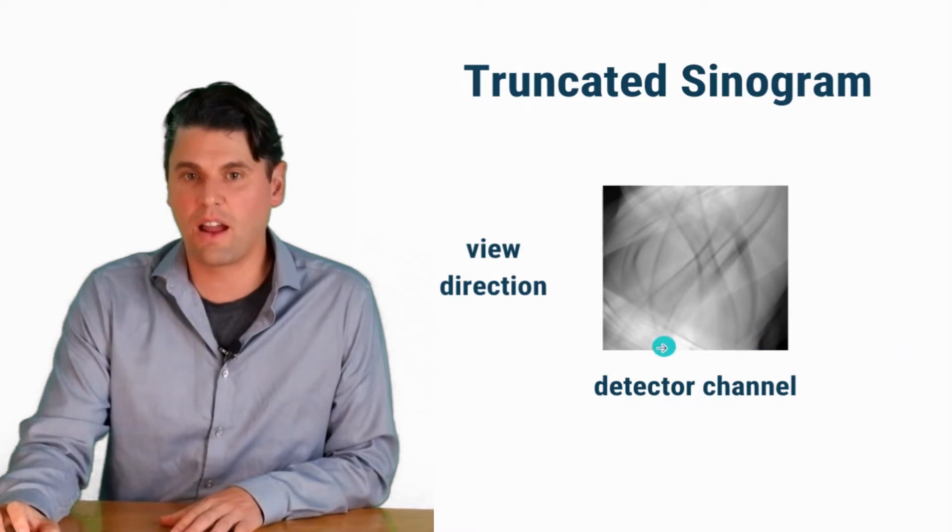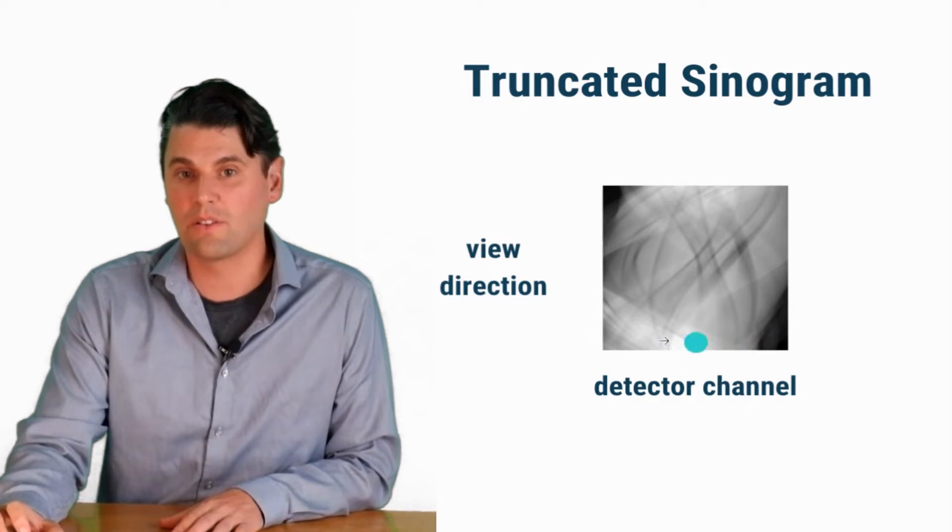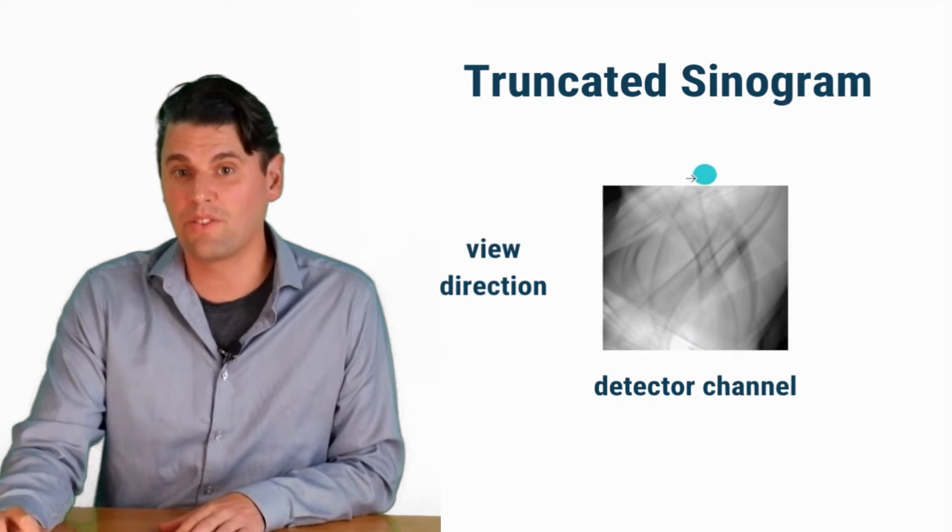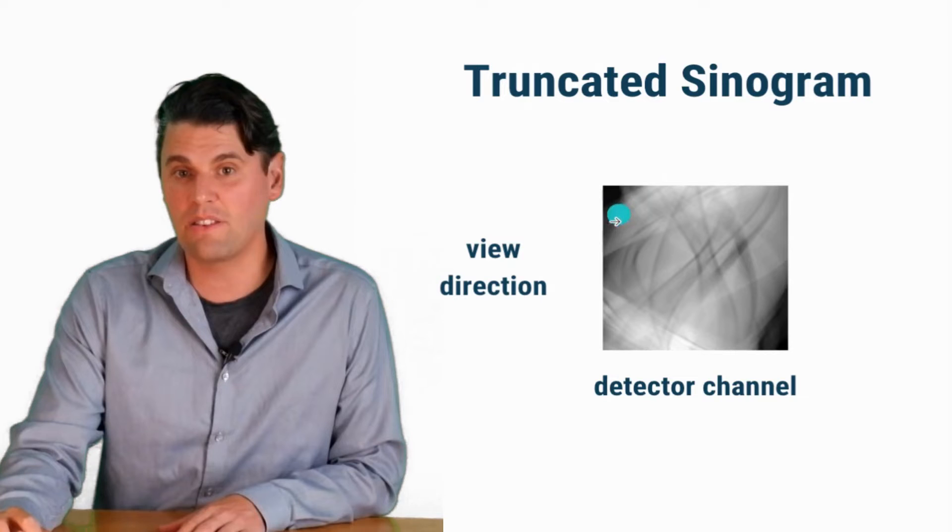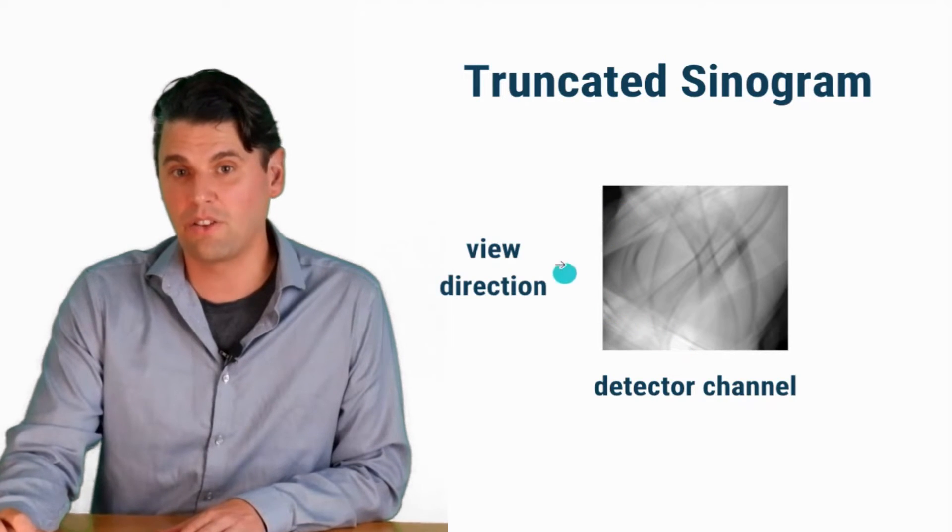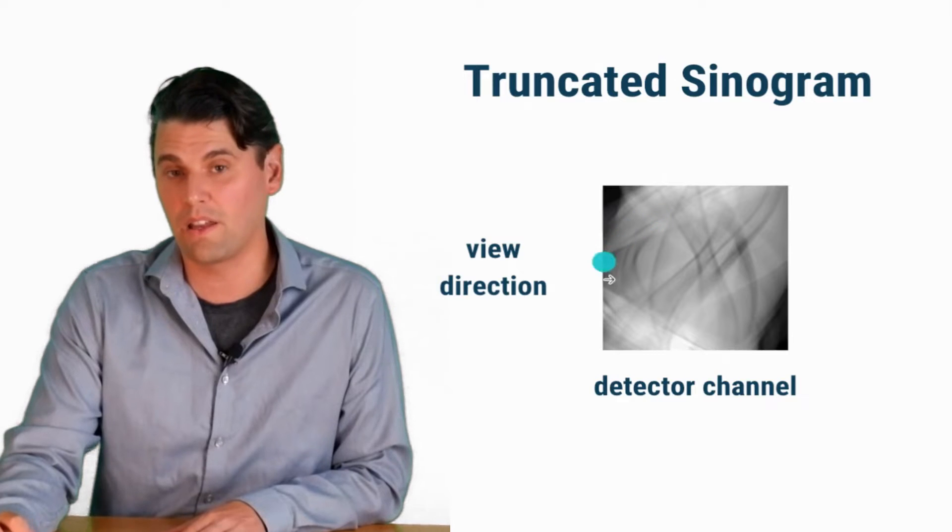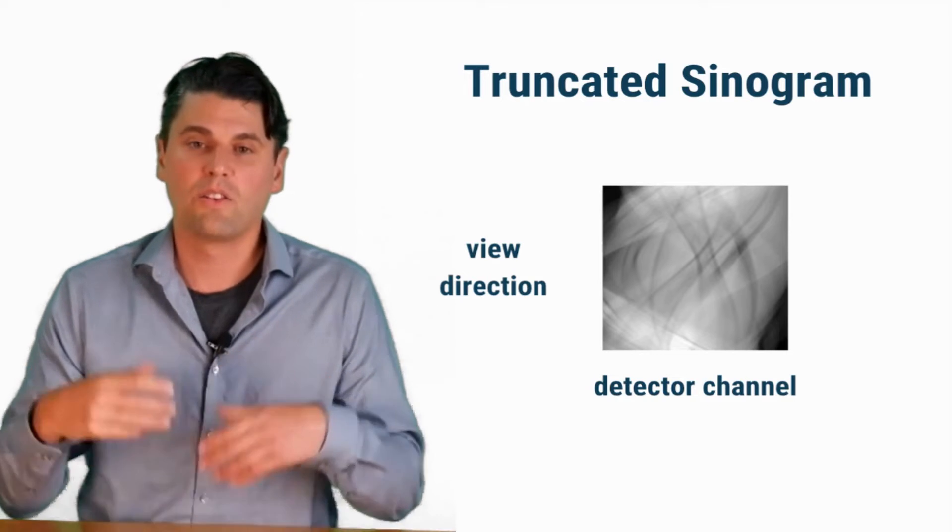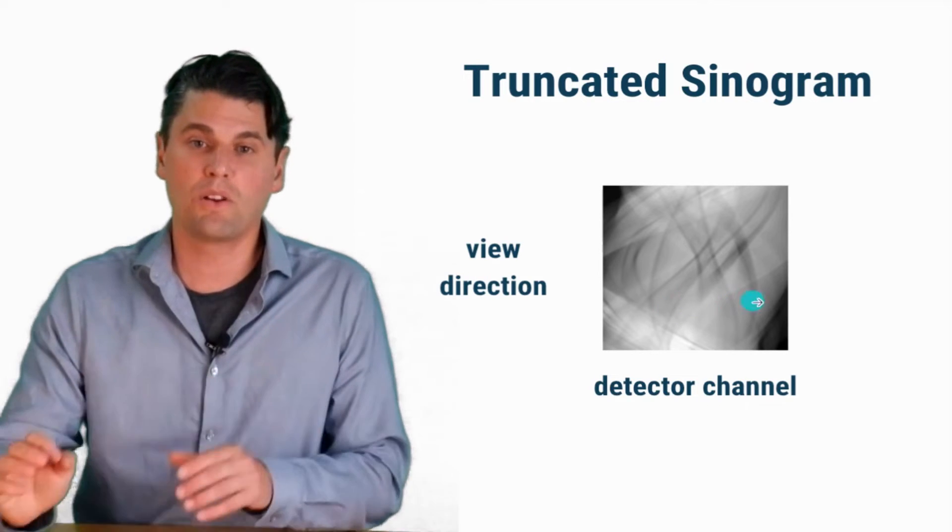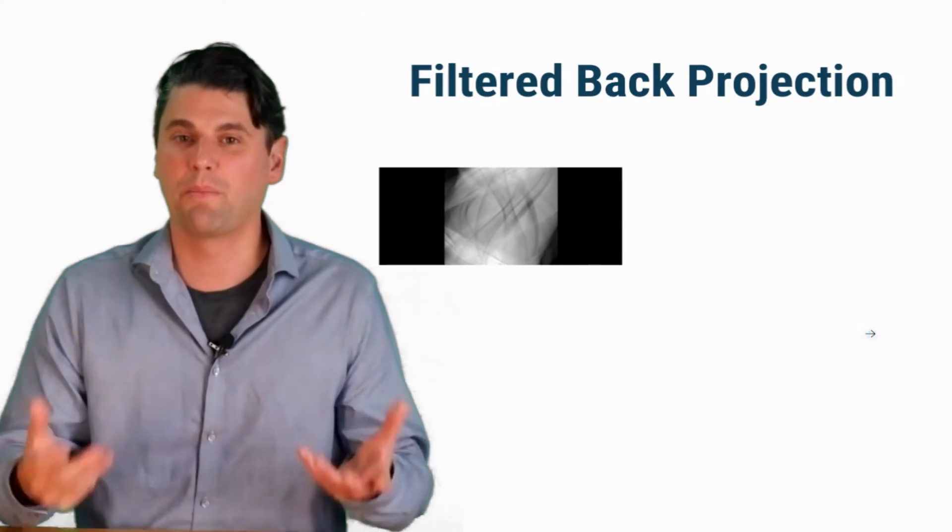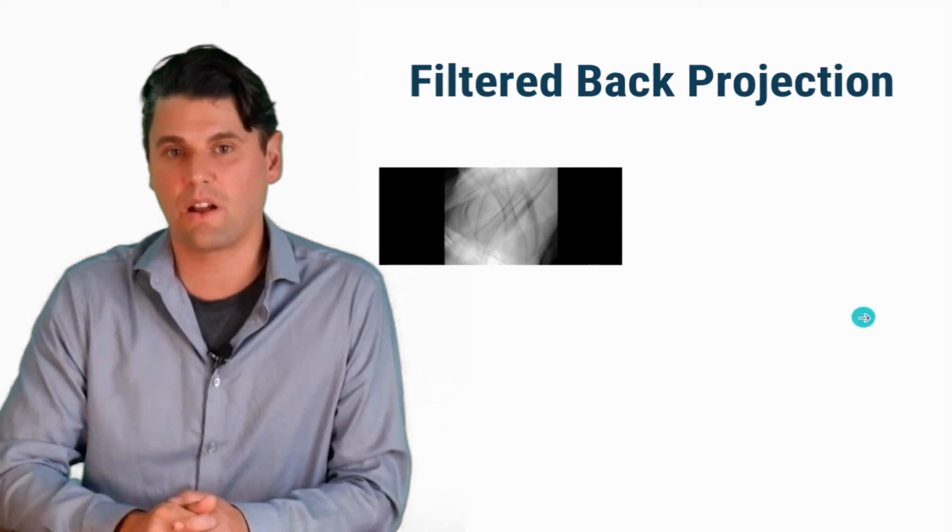If we look at the sinogram, the detector channels in this direction and the views in this direction. Now we can see those sinusoids. You can actually see that we're missing some of those sinusoids. The data should be showing a full sinusoid here, but we are missing some of the raw data. So because we're missing the data, when we go to do our reconstruction, we're actually going to have errors. There's going to be inconsistency in our reconstruction.